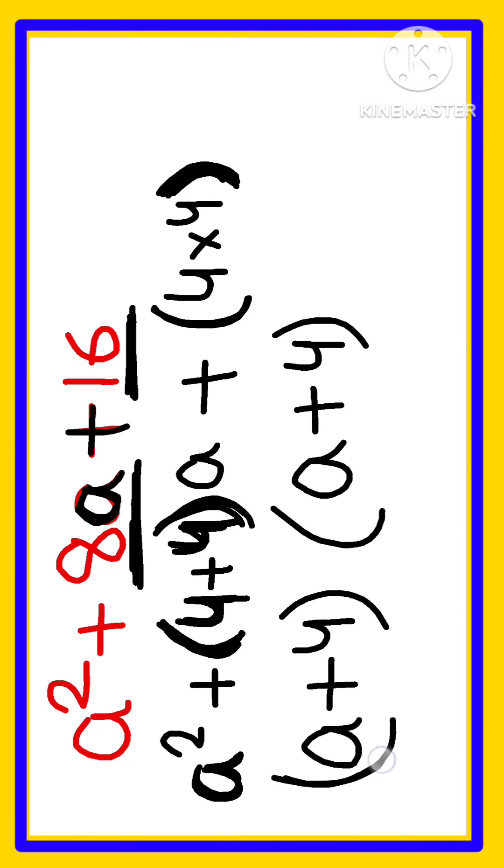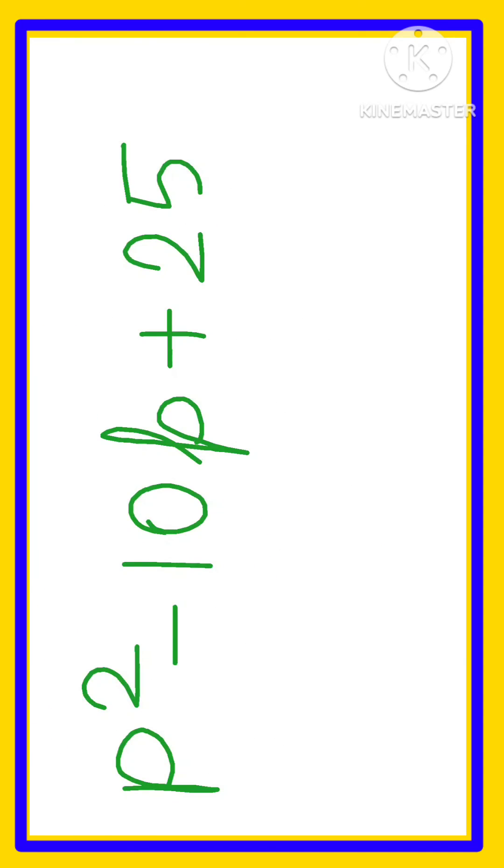So we write the variable a plus 4 once, and again a + 4, because here both numbers are the same.